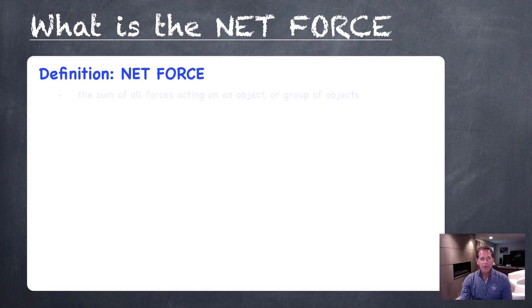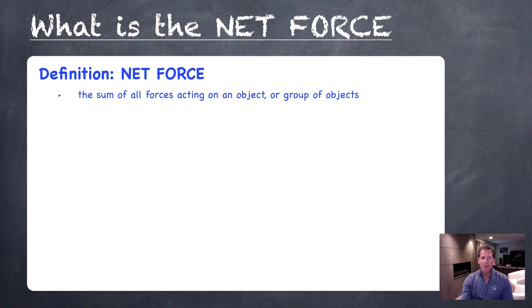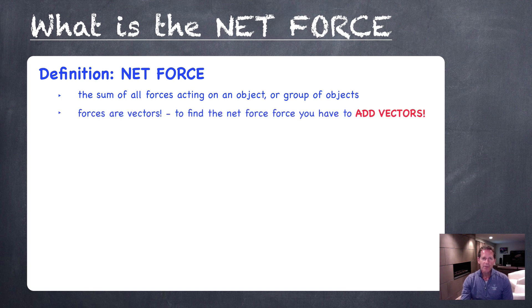A good start is the definition. So the net force represents the sum of all forces acting on an object, or you can consider a group of objects together as one system of objects. So you simply add all those forces together, but remember the forces are vectors, so to find the net force we have to add vectors together.